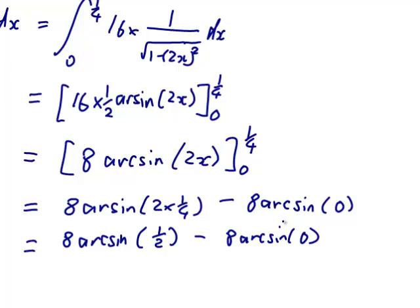So arcsine is the opposite of sine. So I need to think of an angle that gives me sine of 1 half. 1, 2, root 3. Sine of 1 half, that's this angle here. So 30 degrees, pi on 6.